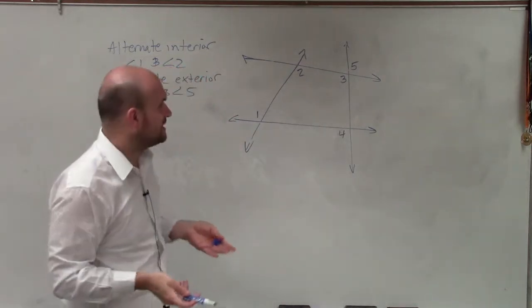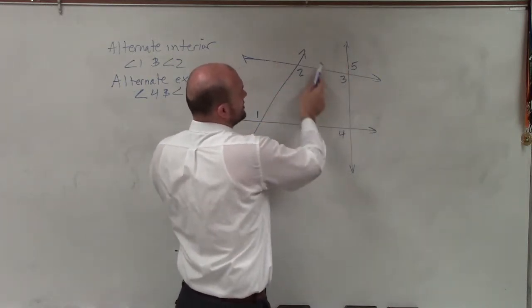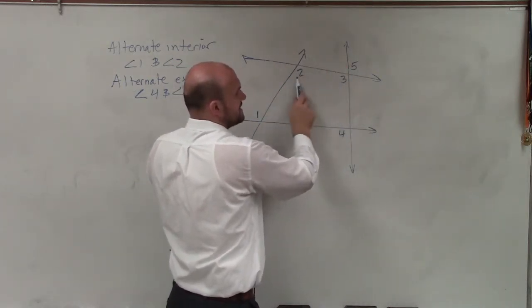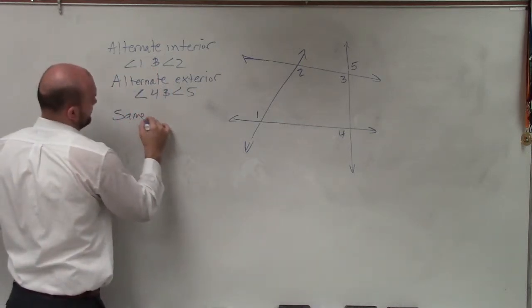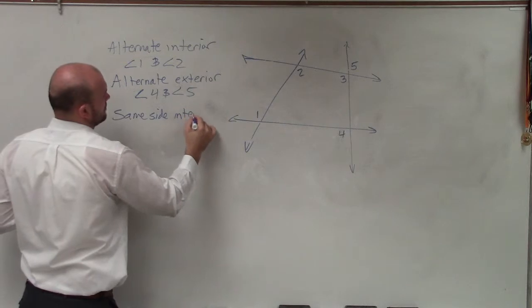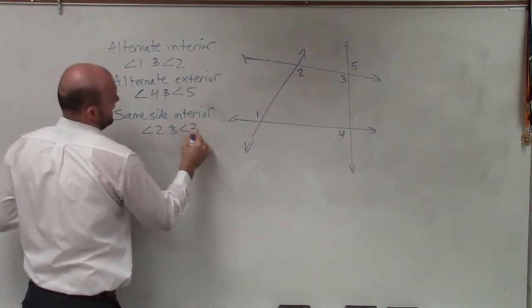Now, on the relationship of two and three, they are both interior of these two lines, but they're not on alternate sides of this transversal. They're on the same side. So that is what we call same-side interior. So that's going to be angle two and angle three.